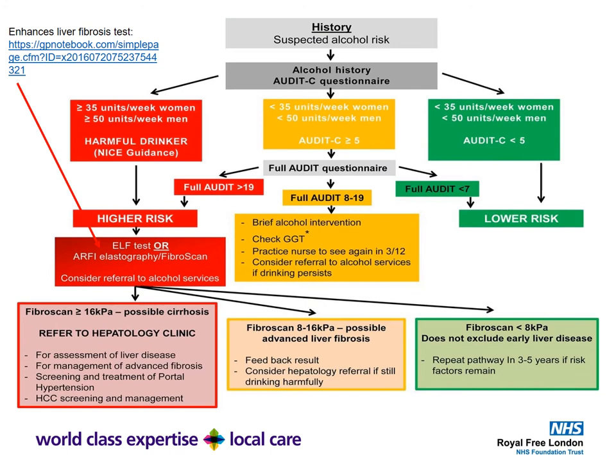This pathway is primarily community-based but gives an idea of where to signpost patients, whether in the community or in hospital. You start with suspected alcohol risk, perform the AUDIT-C, look at the totality of their units, and categorise into red for higher risk, amber for medium risk, or green for lower risk.